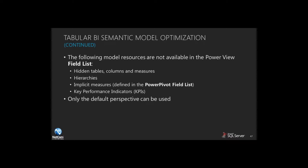As we work in PowerView, not only can we take advantage of those optimizations, but we can also extend our models by creating key performance indicators, by creating new measures that can be used as part of our PowerPivot tables — our pivot tables and pivot charts. We can hide tables, columns, and measures, and build hierarchies that allow us to drill through our data. They've put a lot of functionality you would expect in a true multi-dimensional environment right inside the tabular semantic model.